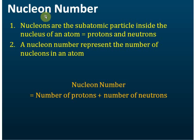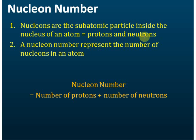So we have two types of nucleons: protons and neutrons. Therefore, the nucleon number represents the total number of nucleons in an atom. The nucleon number is equal to the sum of the number of protons and the number of neutrons.